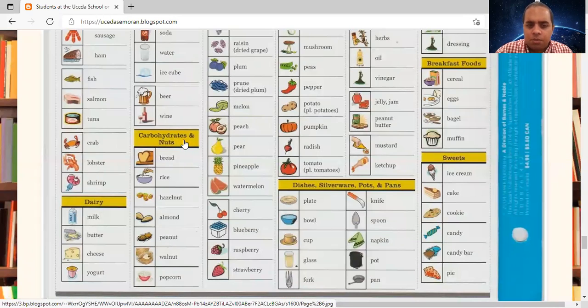Please say with me carbohydrates and nuts. Again, carbohydrates. Carbohydrates and nuts. Bread. Rice. Hazelnut. Almond. Peanut. Walnut. Popcorn.